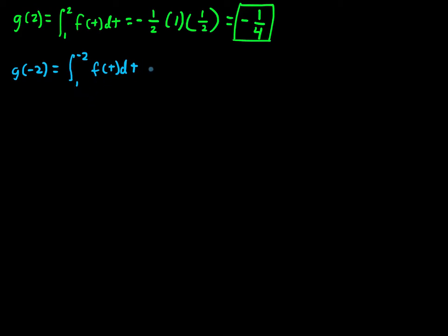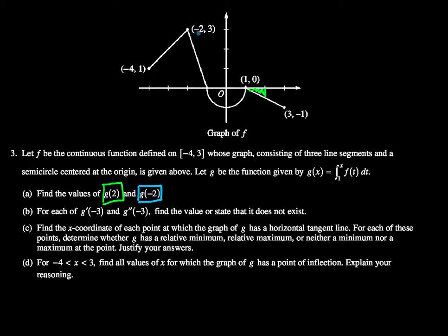So I'll rewrite that as the negative integral from negative 2 to 1 of f of t dt. And that will take care of it, so I need to have this negative, I need to change the sign of whatever that signed area is. Okay, so let's see, from negative 2 all the way up to 1.